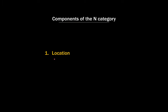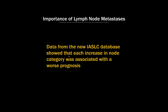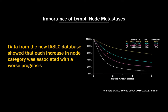The only thing that goes into the N category is the location of the lymph node. The N category is very important because what we know from the IASLC database is that each increase in a node category was associated with a worse prognosis.